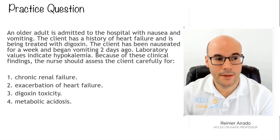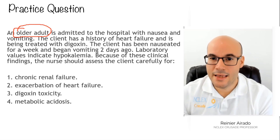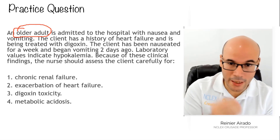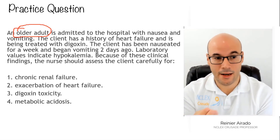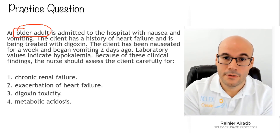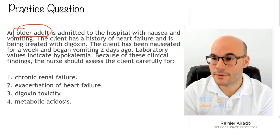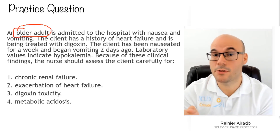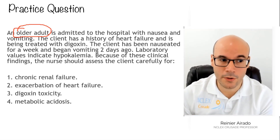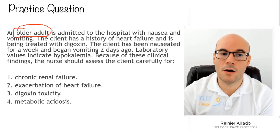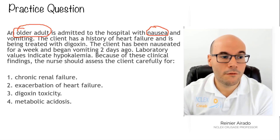So let's identify them in this question. 'An older adult' is telling me we're talking about an elderly person for a reason. We know that the elderly and infants or children have certain risks because of their age, especially when it comes to medication. So an older adult is admitted into the hospital — and now come the clinical manifestations — with nausea and vomiting.